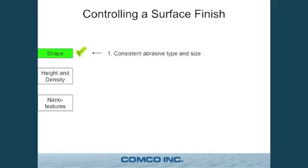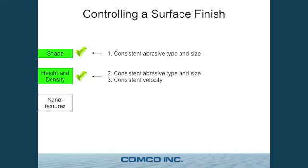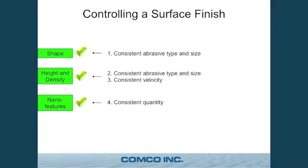The three main characteristics again: if you want to control shape, you need a consistent abrasive type and size — shape meaning grit blasted versus bead blasted surface. Height and density are what you can measure with a profilometer or microscope. Height is also affected by abrasive type, as a heavier particle will push further into a ductile material. You also need constant velocity, because throwing that axe head harder means it goes deeper. Lastly, nano features are mostly controlled by consistent quantity, though consistent quantity also has a minor role in velocity. These three things — abrasive, velocity, and quantity — are what you need to control for a consistent blast stream.